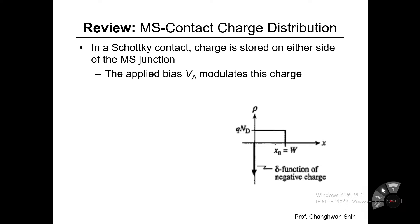The charge should be stored in the metal side or in the semiconductor side. Those charged particles are scattered here and there across the MS contact, and they would be moved and redistributed because of the voltage that you apply. The externally applied bias V_A would modulate the distribution of MS contact charge.